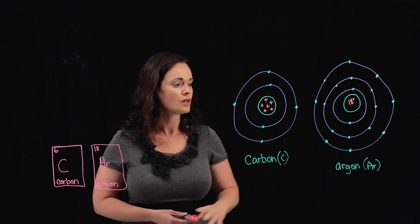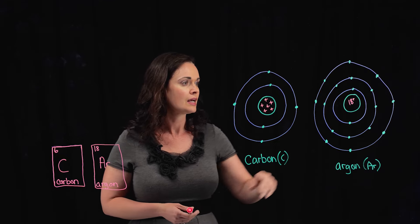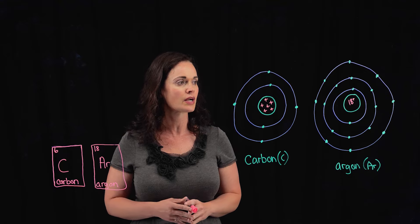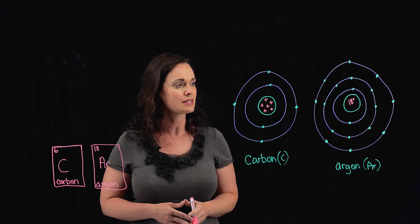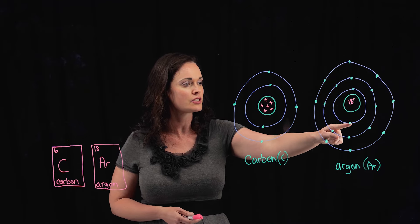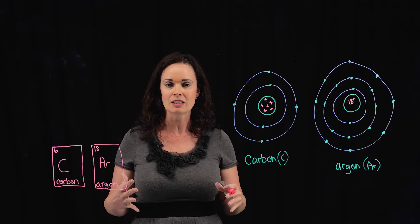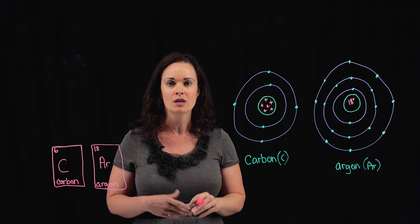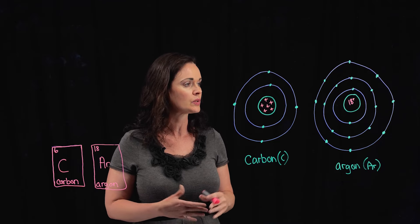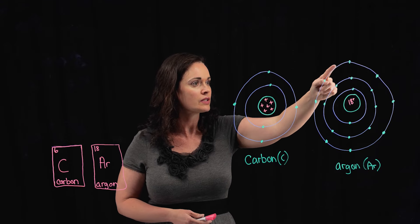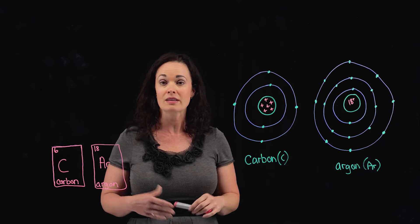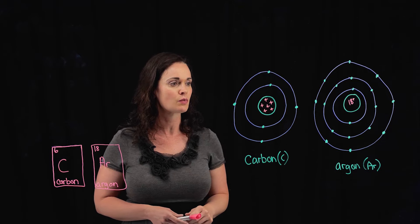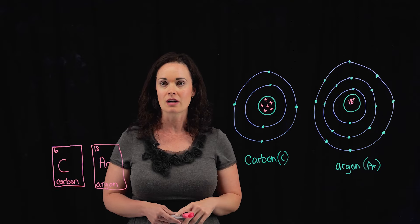Here is argon — a little different. Eighteen protons, and I'll use '18+' as shorthand, which means we also need eighteen electrons. The first shell holds two, leaving sixteen more to fit around the nucleus. The second shell holds eight, so after the first and second shells we have ten electrons placed, with eight still remaining. Those last eight go into the outermost third shell. So the first shell is full, the second shell is full, and the third shell is full as well.